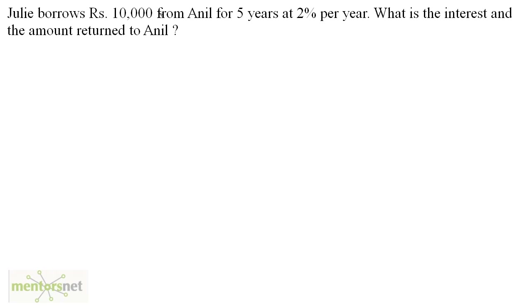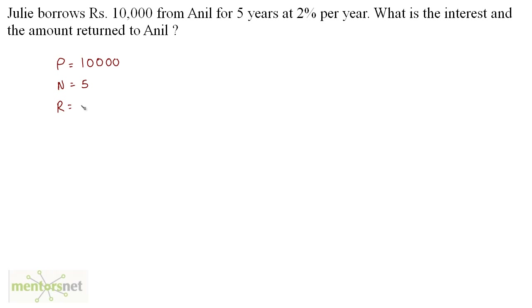Julie borrows 10,000 rupees from Anil, so the amount borrowed is the principal amount. Therefore P equals 10,000. The time for which this amount is used by Julie is 5 years, so N equals 5. And the rate at which interest will be calculated per year is 2%, so R equals 2.